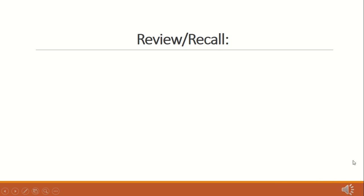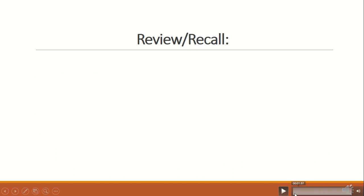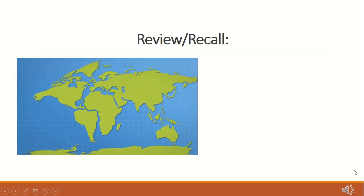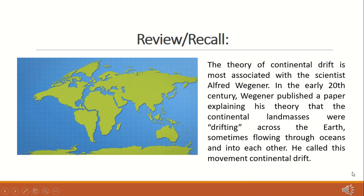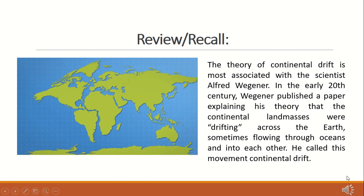Let us have our review or recall. We all know that the continental drift theory describes one of the earliest ways geologists thought continents move over time. Today, the theory of continental drift has been replaced by the science of plate tectonics. The theory of continental drift is most associated with the scientist Alfred Wegener. In the early 20th century, Wegener published a paper explaining his theory that the continental land masses were drifting across the earth, sometimes flowing through oceans and into each other. He called this movement the continental drift.